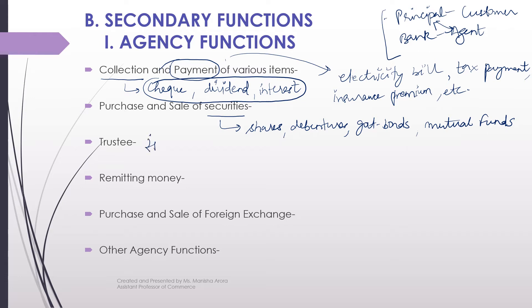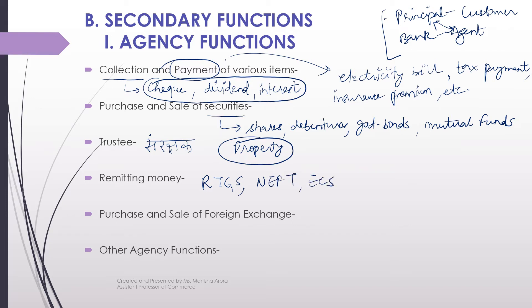The third agency function is trustee — meaning 'sanrakshak' in Hindi, a guardian. A commercial bank can act as a trustee to protect your property. Another function is remitting money — remittance means transferring money from one place to another. The bank can transfer money from one place to another using RTGS, NEFT, or ECS — these electronic modes — to remit your money on your behalf.